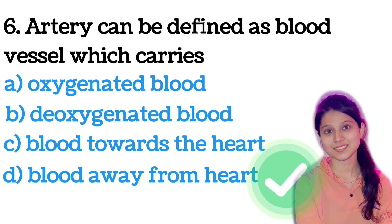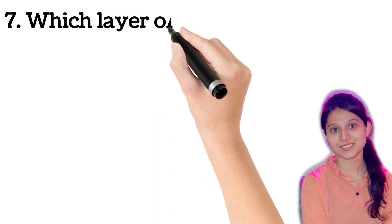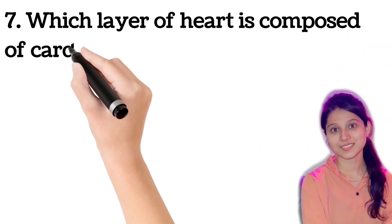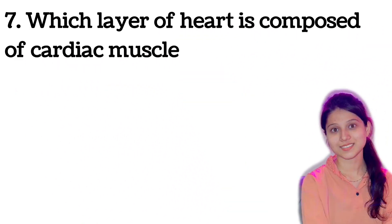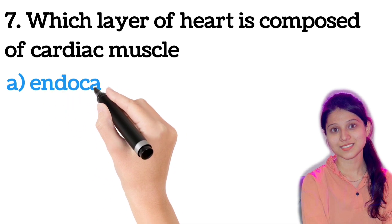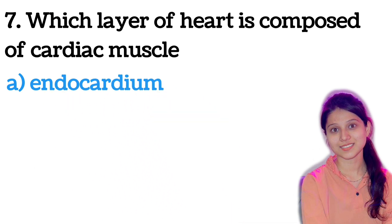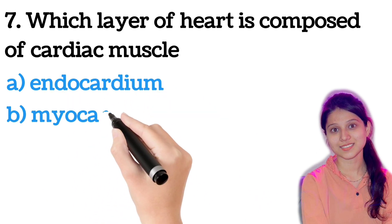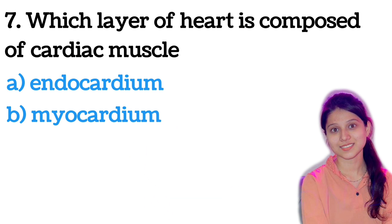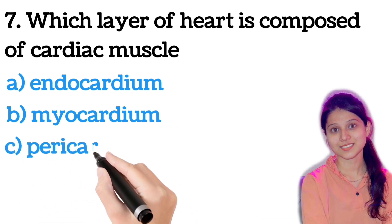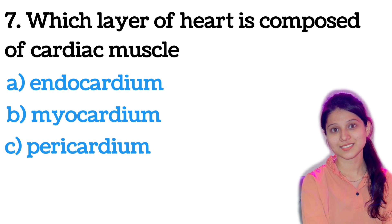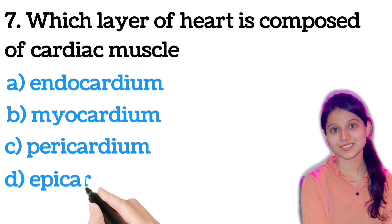Next question: which layer of the heart is composed of cardiac muscle? Options are: endocardium, myocardium, pericardium, or epicardium. The right answer is myocardium — the myocardium layer is composed of cardiac muscles.